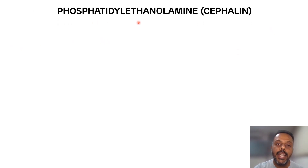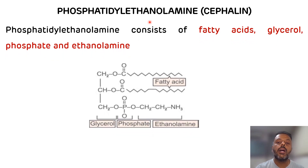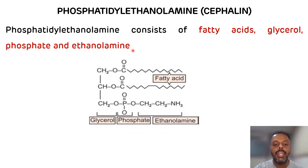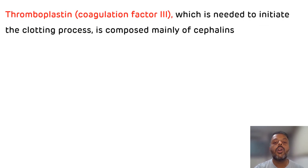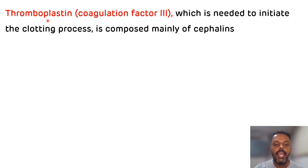Phosphatidylethanolamine is also known as cephalin. Its composition includes fatty acid, glycerol, phosphate, and ethanolamine as a nitrogenous base. You can see in the structure the presence of glycerol, phosphate group, ethanolamine as a nitrogenous base, and fatty acid. The significance of cephalin is that it is present in clotting factor 3, which is thromboplastin, and this thromboplastin is needed to initiate the clotting process.